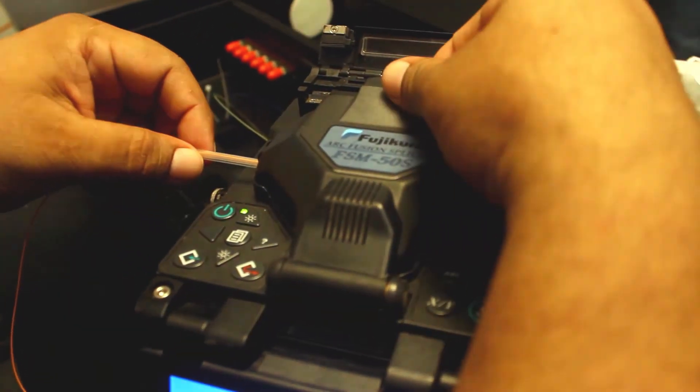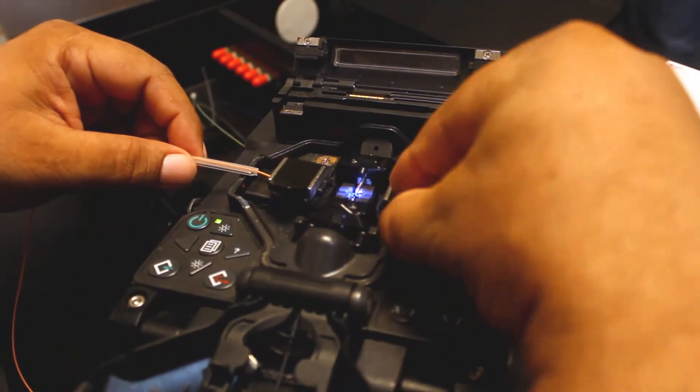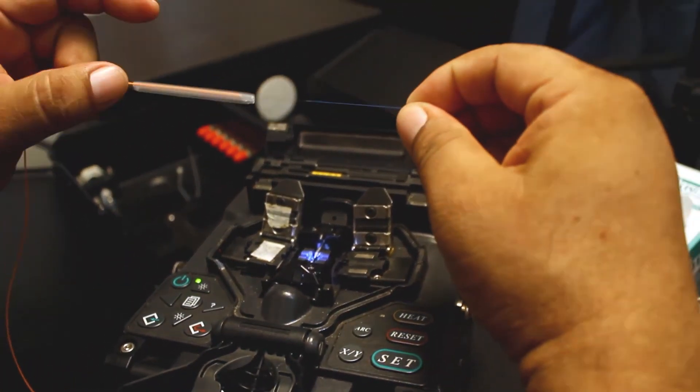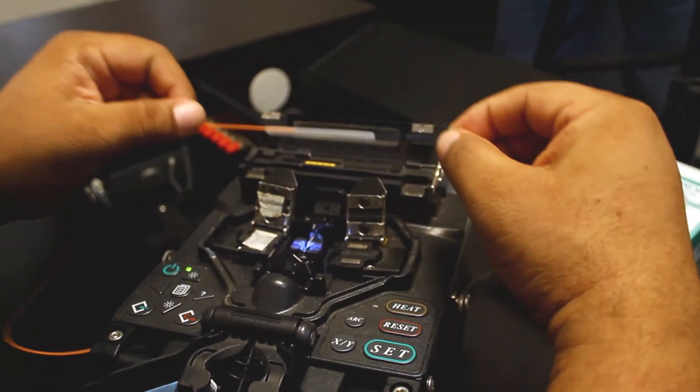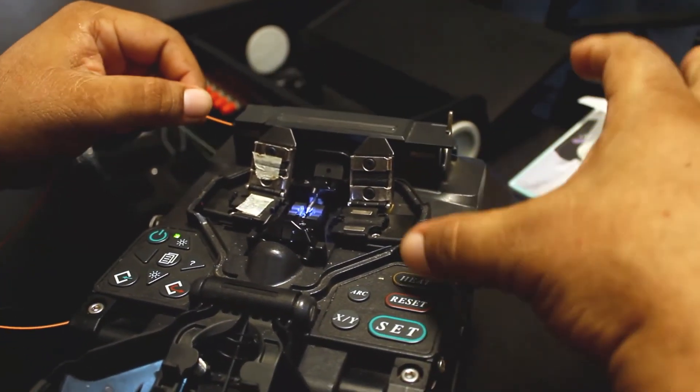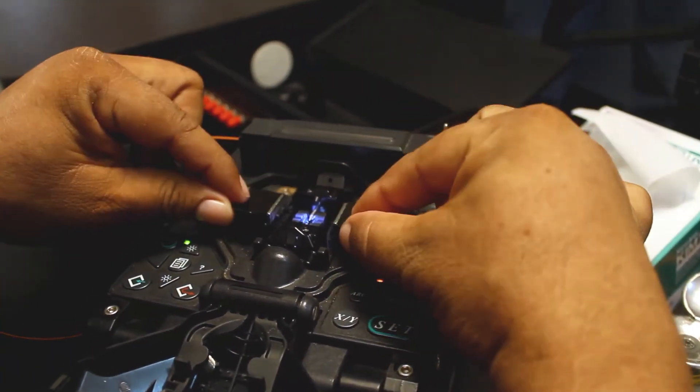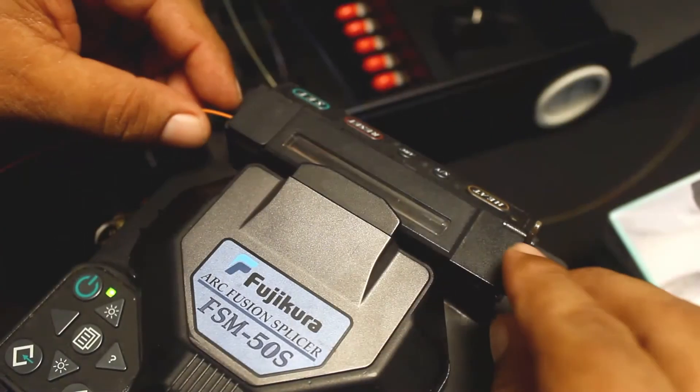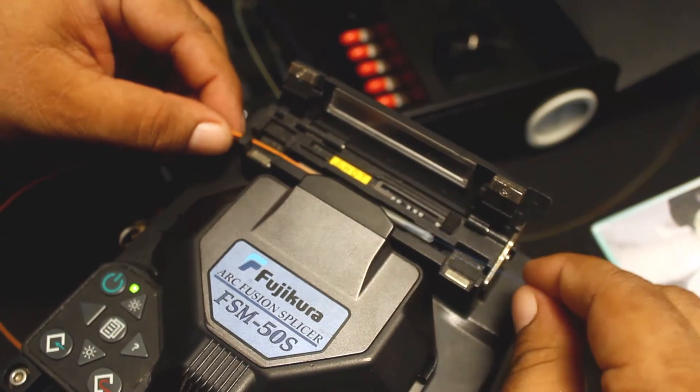When the fusion is over, the device shows you the approximate loss resulting from the splice. Open the lid, take the fiber, and place the protection sleeve over the bare zone. Place the protection sleeve inside the heater, close the lid, and wait until it heats the sleeve. The splicer will let you know when it's done, and your fusion splice is ready.